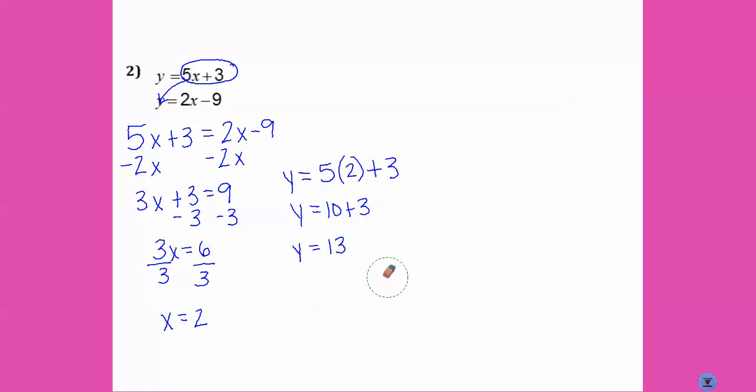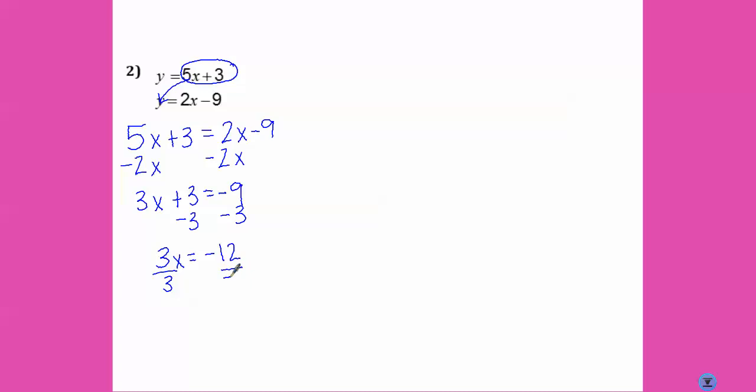Rewind, I messed up. Let's go all the way back. My bad. Not perfect. Sorry. It's negative 9 here. So it should be negative 9 there. Subtract 3. 3X equals negative 12. Divided both sides by 3. X equals negative 4.